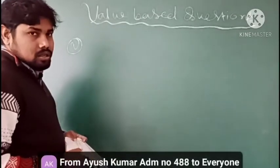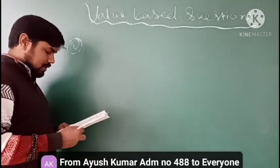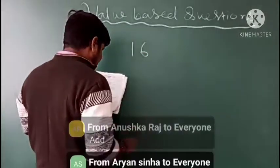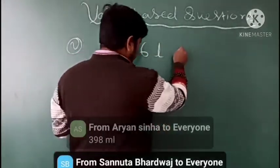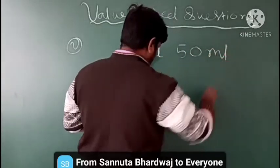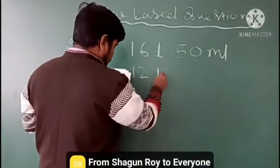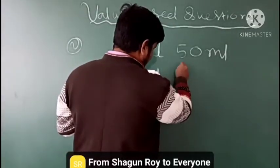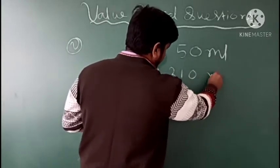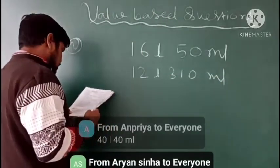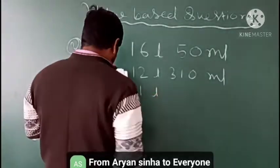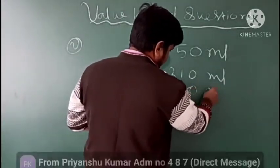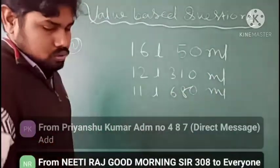This is a very easy question. Three buckets are there with milk quantities: one bucket has 16 liters and 50 ml, another bucket has 12 liters and 310 milliliters, and the third has 680 milliliters. We need to find the total quantity of milk.